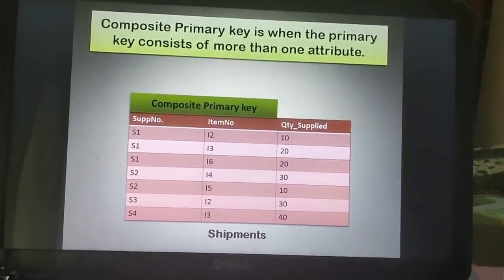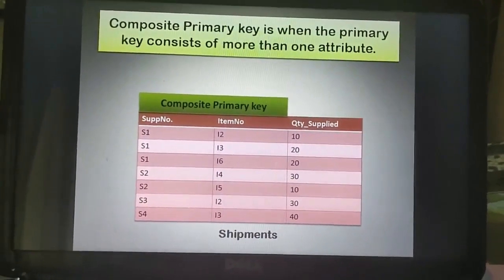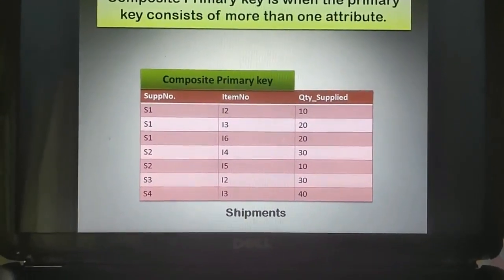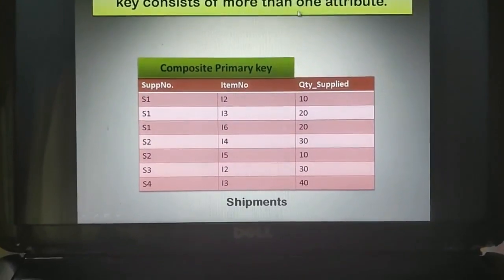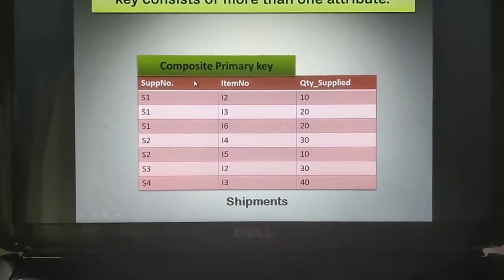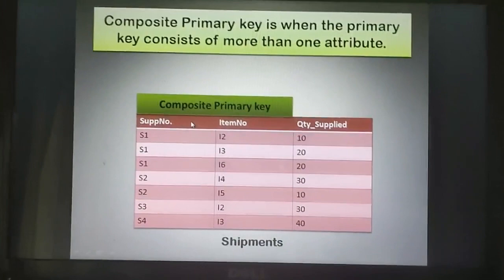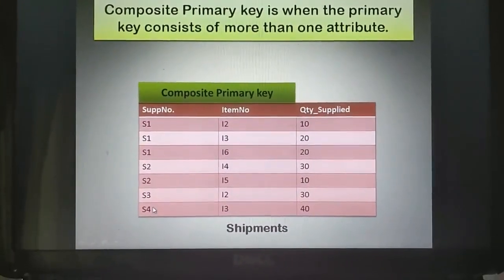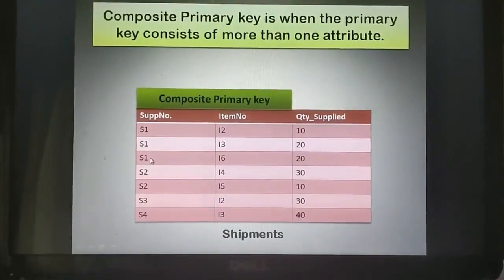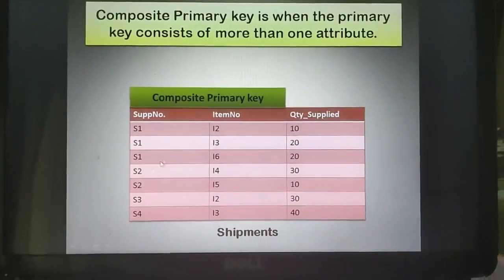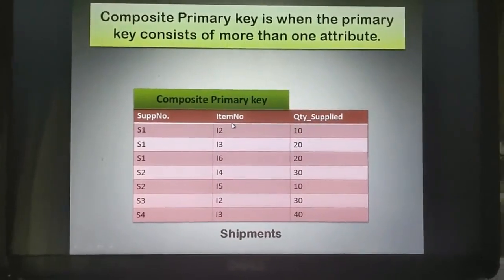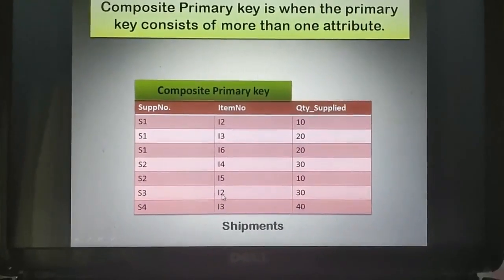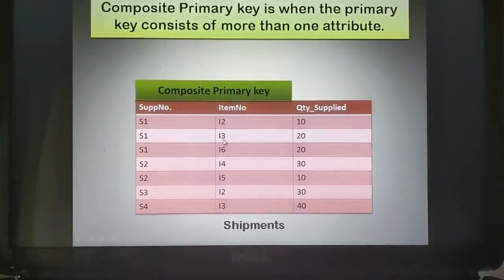Now, composite primary key. Consider the example of the table shipments, which has three attributes: supplier number, item number, and quantity supplied. Looking at the values, supplier number has s1 repeated three times and s2 repeated twice. Item number has i2 and i3 each repeated twice. Quantity supplied also has repeated values — 10, 20, and 30 are each repeated twice.